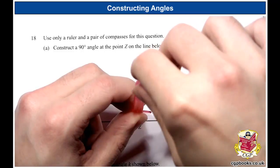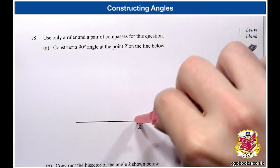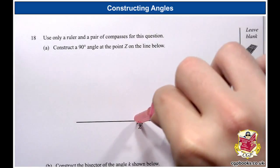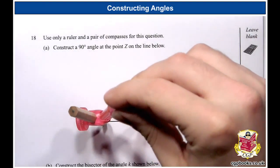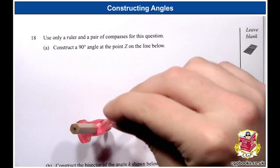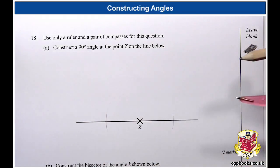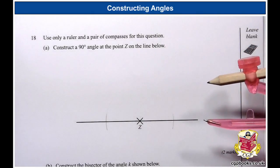And then it doesn't matter how big the compass is as long as we don't let it change size. So I'm going to make a mark over on this side and mark this side. I'm just going to move my hand in a minute so you can see what I've done. There we go. So you can see I've now got two arcs there. I didn't let the compass change size, either side of the point Z.